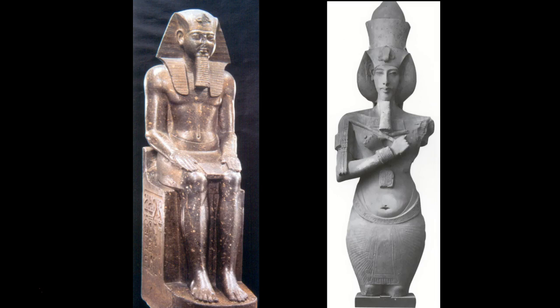Here is one of those statues from the Old Kingdom for comparison. Akhenaten claimed to be both the son and the sole prophet of Aten. During his rule, profound changes occurred in Egyptian art. A colossal statue of him from Karnak retains the standard frontal pose of canonical pharaonic portraits, but the effeminate body with its curvy contours and long face with full lips and heavy-lidded eyes are very unconventional — far removed from the heroic proportioned figures of his pharaoh predecessors.